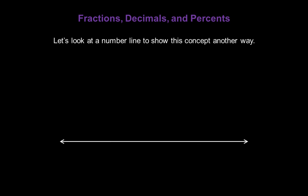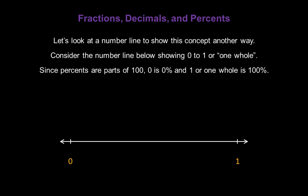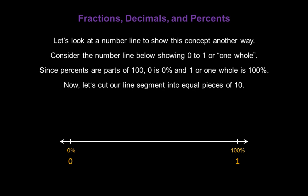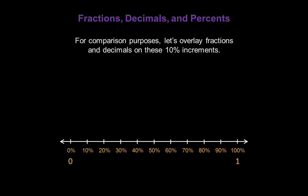Let's look at a number line to show this concept another way. Consider the number line below showing zero to one, or one whole. Since percents are part of 100, zero will be zero percent and the one, or one whole, is 100%. Now let's cut our line segment up into equal pieces of ten. Each increment will represent ten percent of our number line segment.